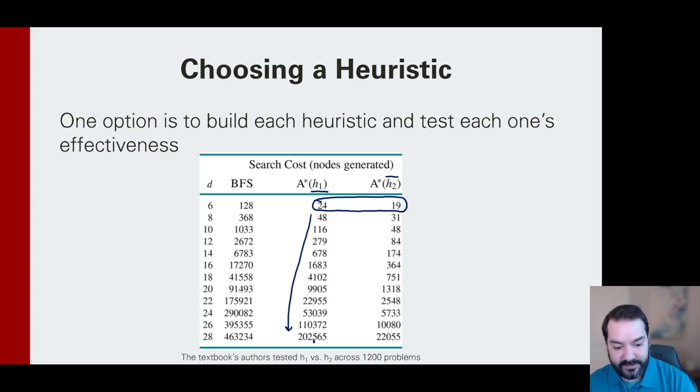But notice as the steps increase, as we get into more complex problems, just counting how many tiles are in a misplaced space is going to require us to do hundreds of thousands of considerations. Whereas if we look at H2 using the Manhattan distance formula, that's actually going to only take us into the tens of thousands. So we now have run our different heuristics. We see that H2 is the better of the two, and that's the one we would go with.